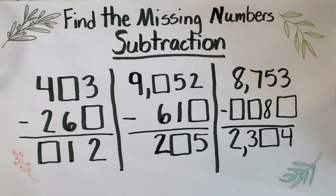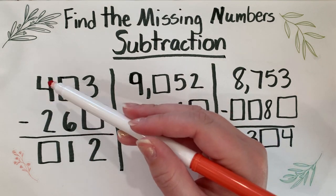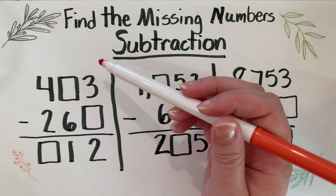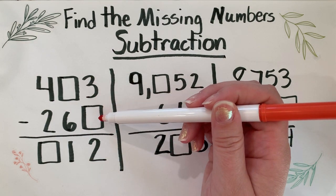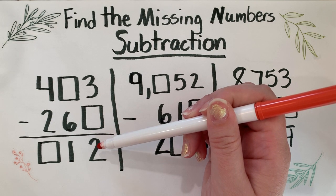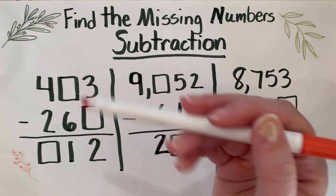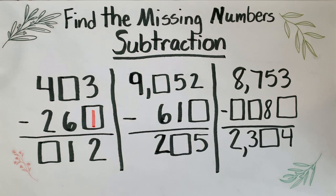So go ahead and pause and either screenshot or write down the problem and solve it. Let's begin. So my first box, I'm always going to start here in the ones place. We're not going to subtract from the left, we're not going to subtract from the middle - we always start with that ones place. So three ones minus who knows how many equals two ones. Three minus what will give me two? If you said one, that is absolutely correct. Three minus one is two.